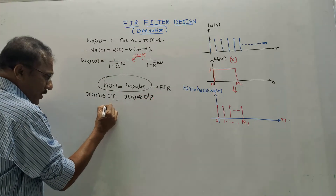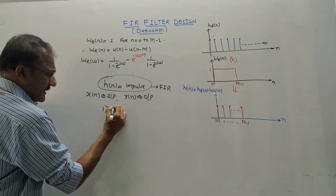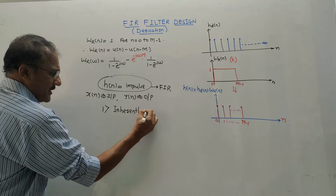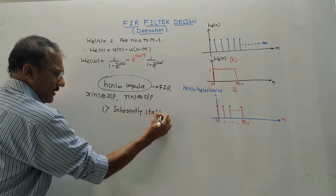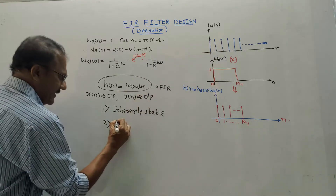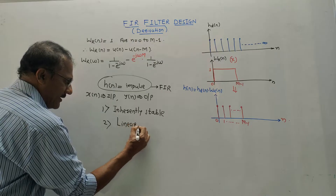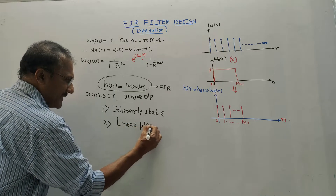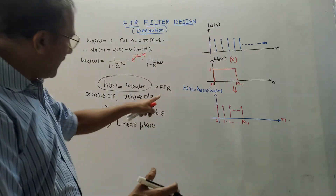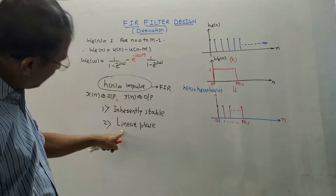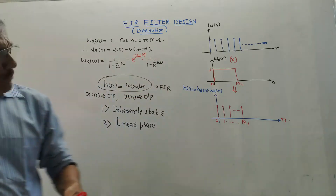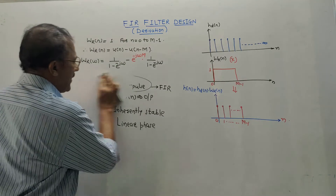There are two important characteristics of FIR filters. First, all FIR filters are inherently stable — by default, FIR filters are stable. Second, FIR filters have a linear phase response. If you draw the graph of phase for an FIR filter, this graph is linear. These are the two important characteristics of FIR filters.